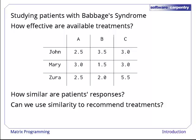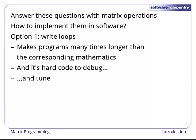Suppose a scientist is studying patients with Babbage's Syndrome, and she has a patient response value for each patient and each potential treatment. We might ask several questions about the responses, like how similar are patients' responses, or whether one treatment is recommended over another. Both of these questions can be answered using matrix algebra, but there are several ways to program with matrices.